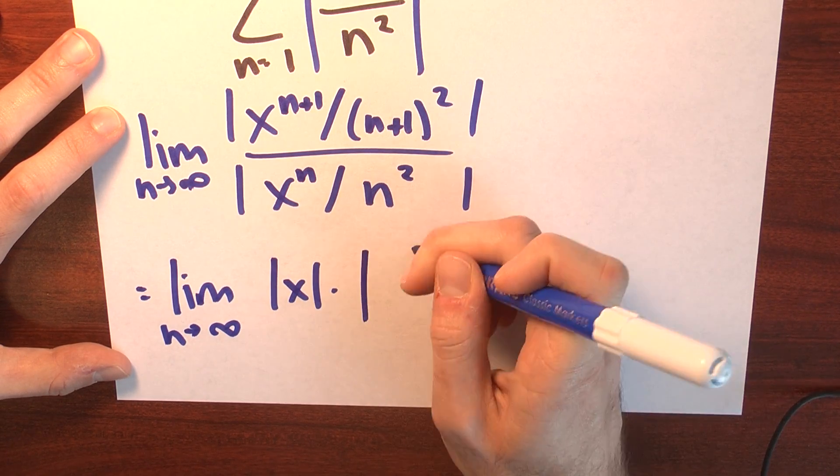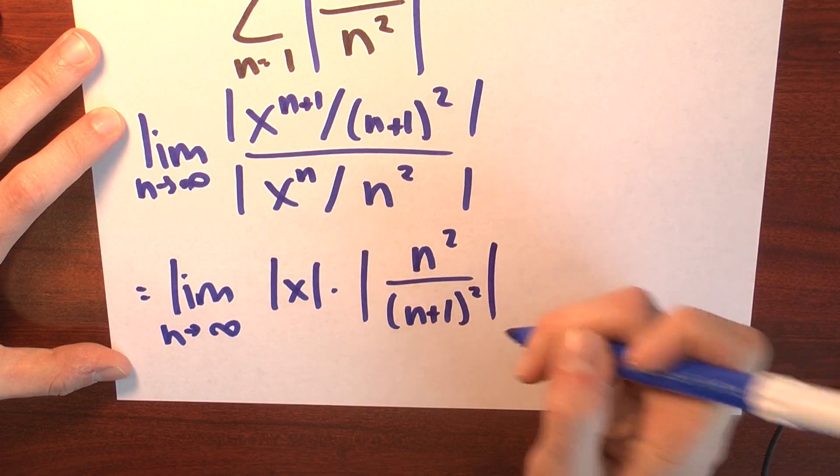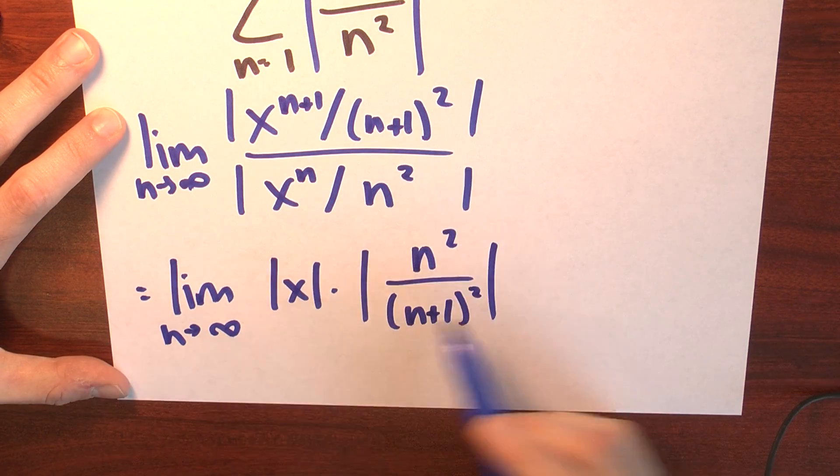And I've got n squared in the denominator of the denominator. So I can write this as n squared over n plus 1 squared. Now, what is this limit?